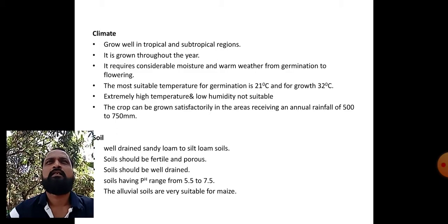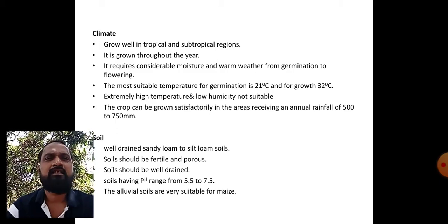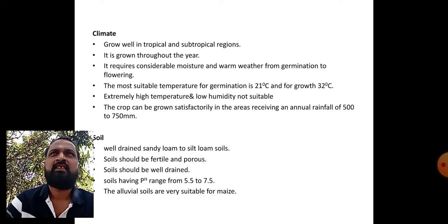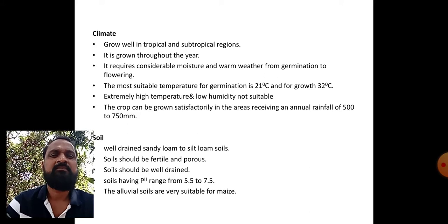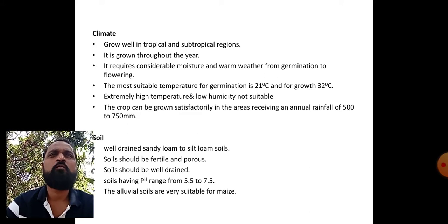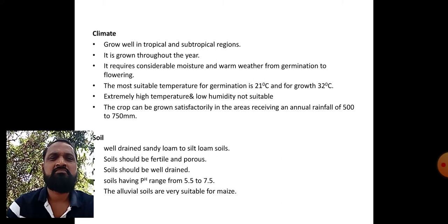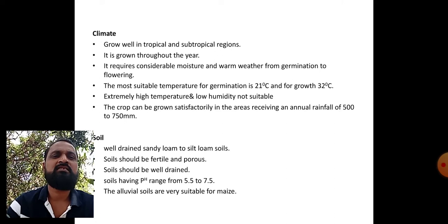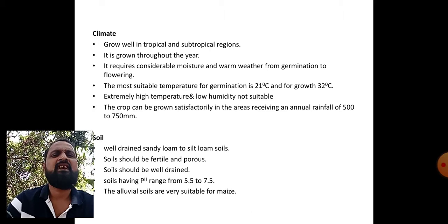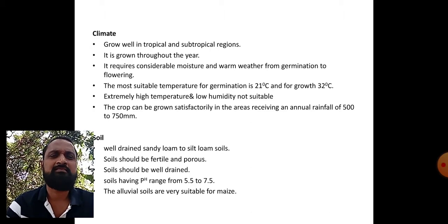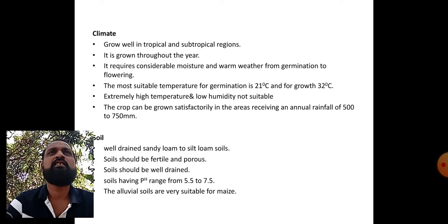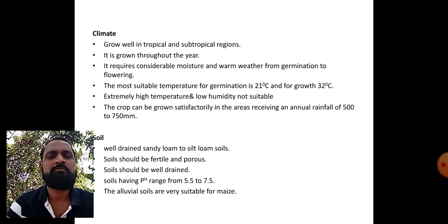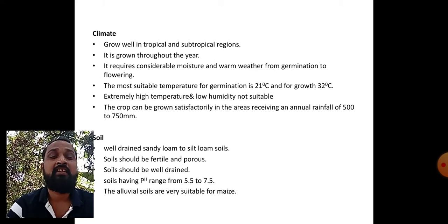Climate: maize crop can be cultivated under tropical and subtropical regions. This crop can be grown throughout the year. It requires considerable moisture and warm weather from germination to flowering. The most suitable temperature range from germination to maturity is 21 to 32 degrees centigrade. Extremely high temperatures and low humidity are not suitable. The crop can be grown satisfactorily in areas receiving annual rainfall of 500 to 750 mm, making it a rain-fed crop.